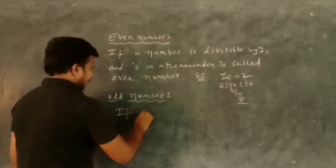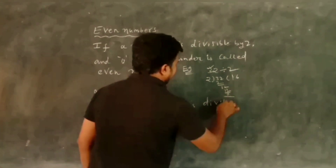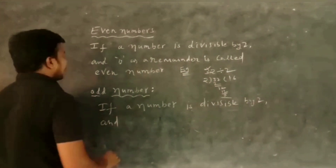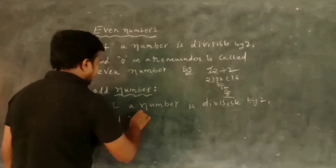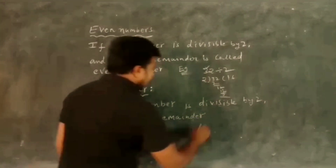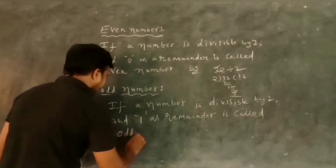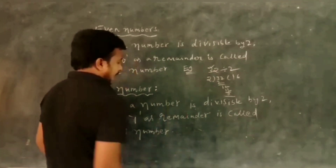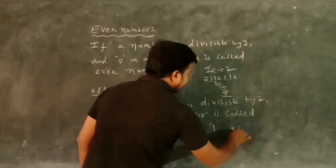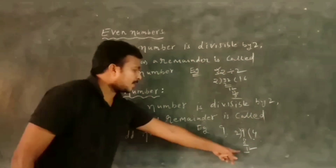Odd number: if a number is divisible by 2 and gives 1 as remainder it is called an odd number. Example: 9. We divide 9 by 2 — 2 fours are 8, remainder 1. So 9 is an odd number.